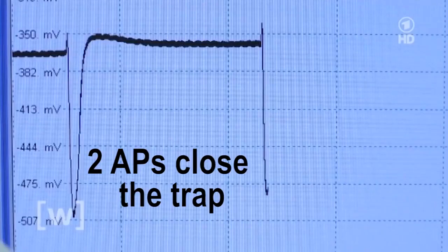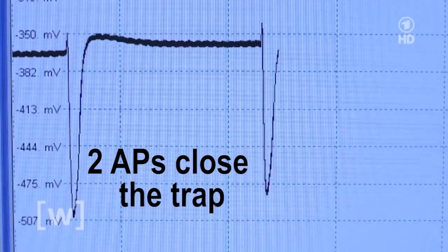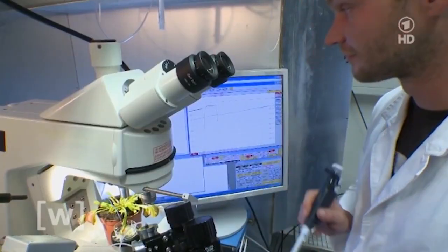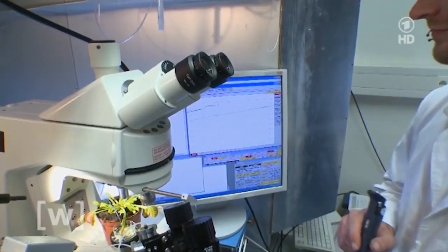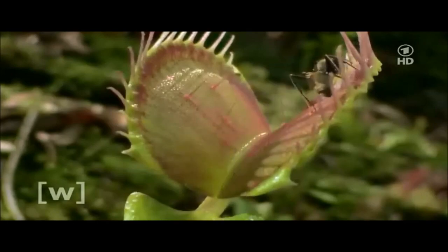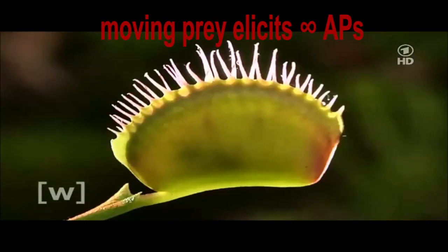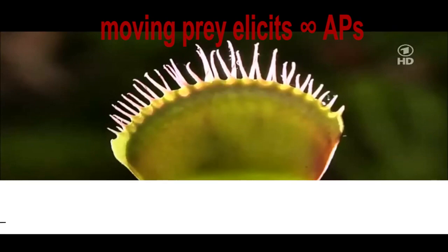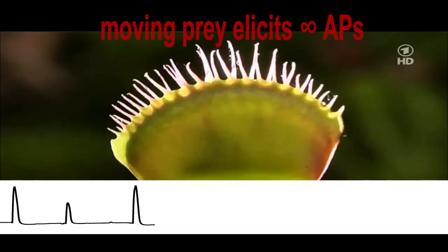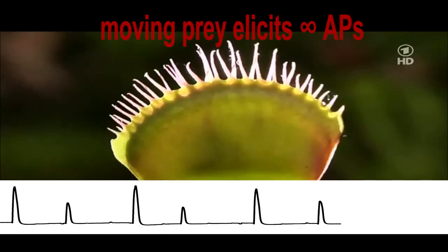Two action potentials are required to close the trap. The trapped insect struggles to escape the green cage, repetitively touching the trigger hairs. Trains of action potentials excite the flytrap.